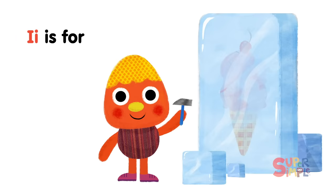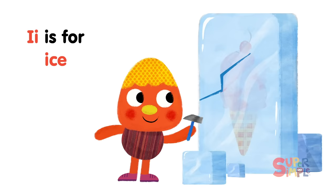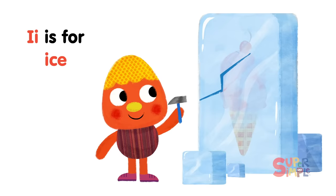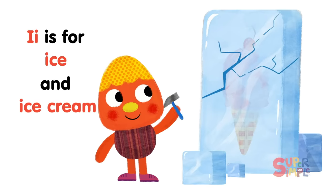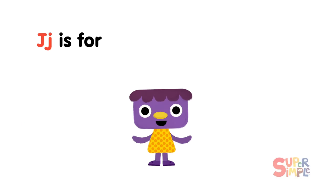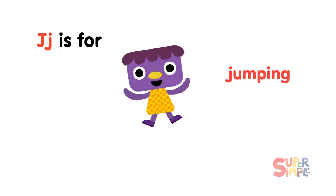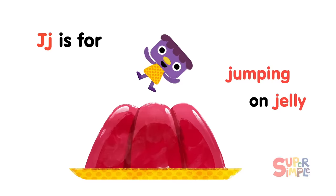I is for Ice and Ice Cream. J is for Jumping, Jumping on Jelly.